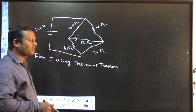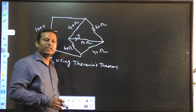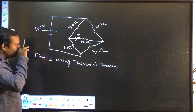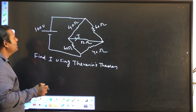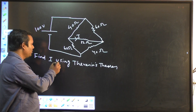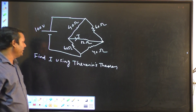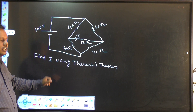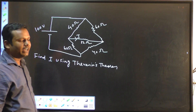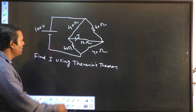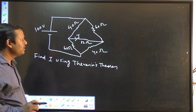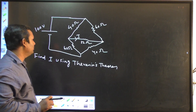In this lecture, I will discuss some numerical examples of Thevenin's theorem — the application of Thevenin's theorem. In this question, it is given to find current I using Thevenin's theorem. You have to find the current I flowing through this 12 ohm resistor using Thevenin's theorem.